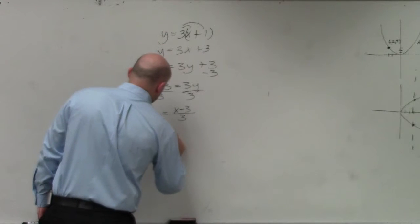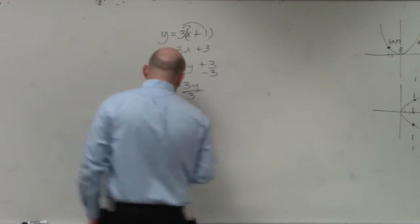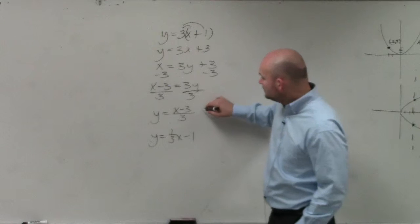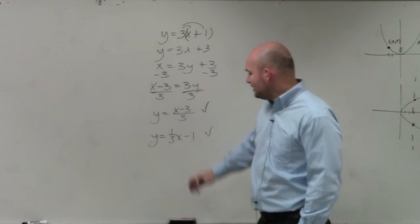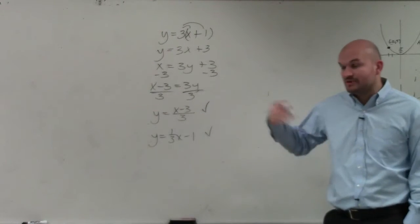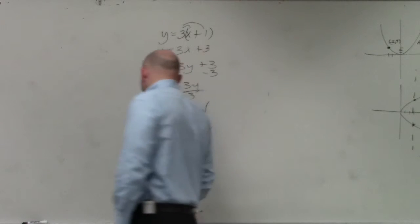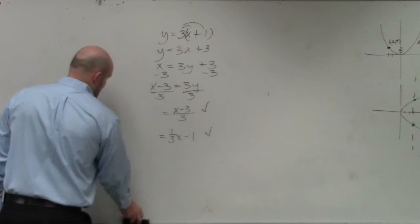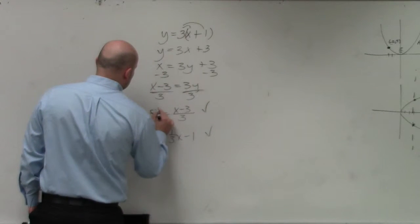Now I could rewrite that as y equals 1 third x minus 1 if I wanted to, but either way. We want to, now, once we solve for y, we can replace that with f inverse. So you'd write it like this, f inverse of x.